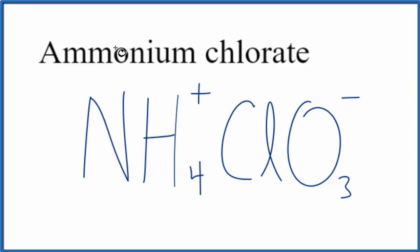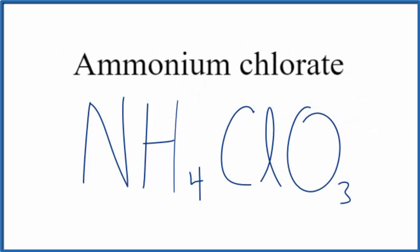So because we have a positive ion and a negative ion, this is an ionic compound, we have to make sure the charge is balanced. We need a net charge of zero. So in this case we have a plus and a minus, that adds up to zero. So we have a net charge of zero, and this is the formula for ammonium chlorate, NH4ClO3.